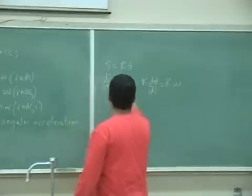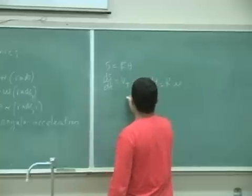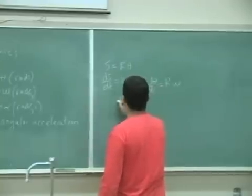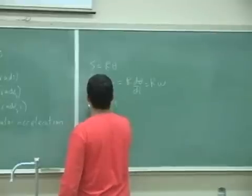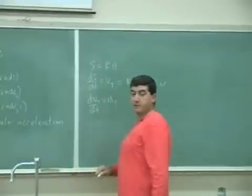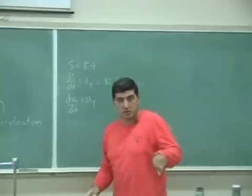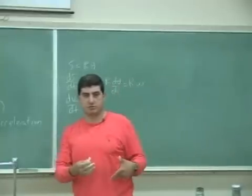And then if I take the derivative of the tangential velocity, so that gives me a tangential, which equals to dv tangential dt. Remember in Chapter 4, we talked about that. The tangential acceleration is if while you're going in a circle, you're also speeding up.